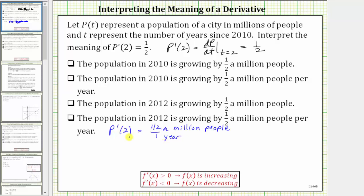So now we know when t equals 2, the population is increasing at a rate of 1/2 a million people per year.